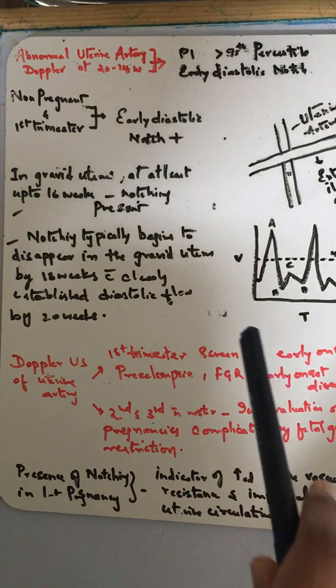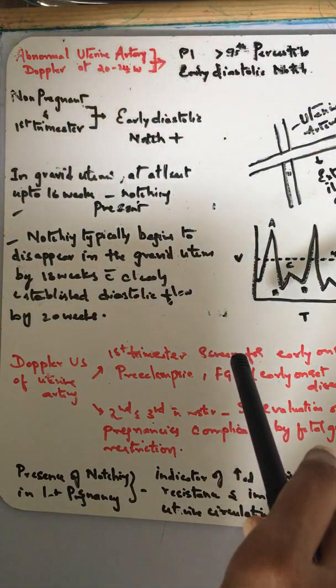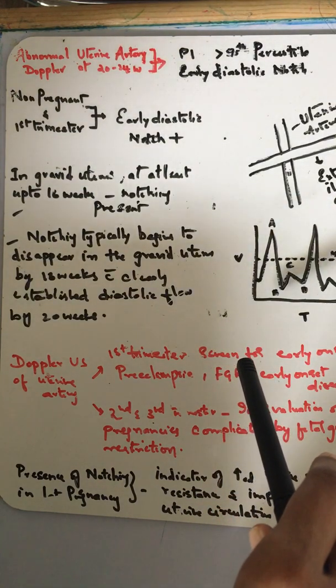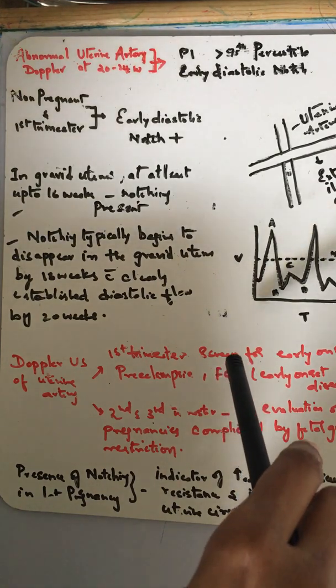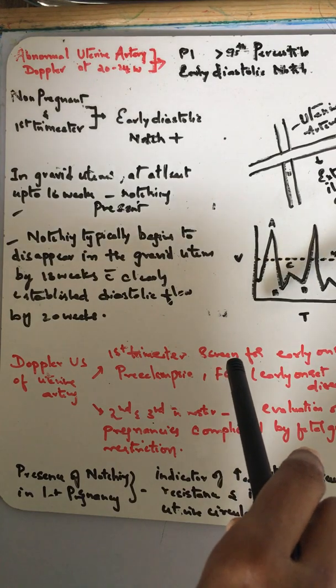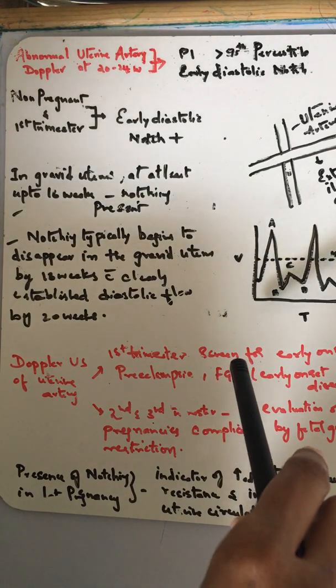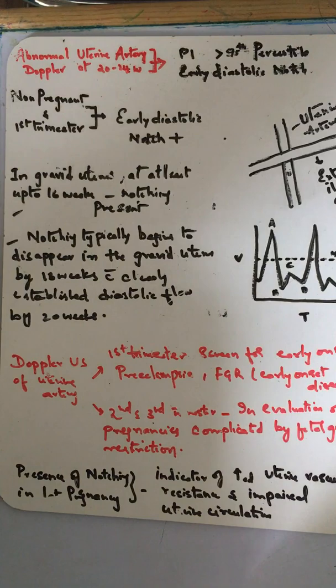During late pregnancy, it should not be more than 1. For example, at 34 weeks, the PI at the 50th percentile is 0.7 and 95th is 0.9. At 40 weeks, at the 50th percentile, the PI is 0.6 and the 95th percentile is 0.9. In late pregnancy, it should not be more than 1.